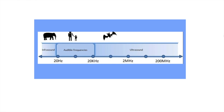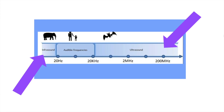Ultrasound is a very high frequency sound that only bats and dolphins can hear. Infrasound is a very low frequency sound that only large mammals like elephants can hear. And the audible frequencies are what we can hear as humans.